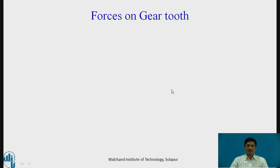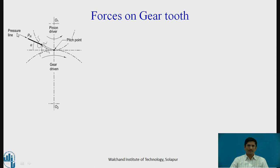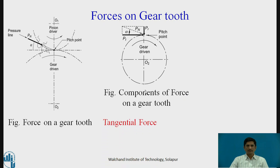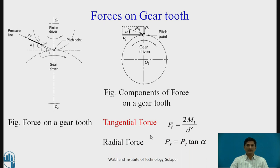Now, the forces on gear tooth. A typical gear system involves the pressure line along which the normal force Pn acts at an angle alpha. For the driven gear, at the pitch point, the tangential force Pt and radial force Pr are acting. Our interest is the tangential force: Pt equals 2 times the torque divided by d-dash (the PCD). The radial force is given as Pr equals Pt tan alpha.